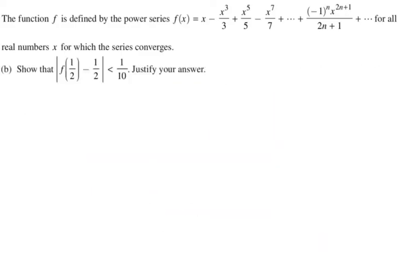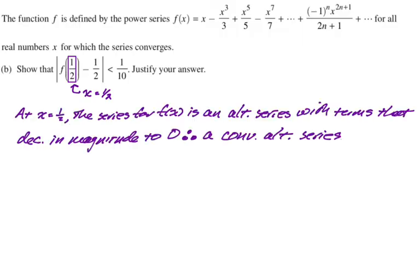Show that the absolute value of f of 1 half minus 1 half is less than 1 tenth. So, the absolute value of f of 1 half minus 1 half is saying the error. So, we're just trying to show that the error is less than 1 tenth. But, like, the error doing what, right? Well, clearly, we're plugging 1 half into f. So, x is going to be equal to 1 half. So, now we just have to figure out how many terms of the series did they use to get 1 half as the approximation. That's what we're trying to do. So, I want to establish that this is a convergent series. I don't know that I really need to do this. So, I'm not going to make you watch me write it. But, I'm going to say, at x equals 1 half, the series for f of x is an alternating series with terms that decrease in magnitude to 0. Therefore, it is a convergent alternating series. I'm just doing that to justify using the alternating series error. Because I don't want to use Lagrange on this.